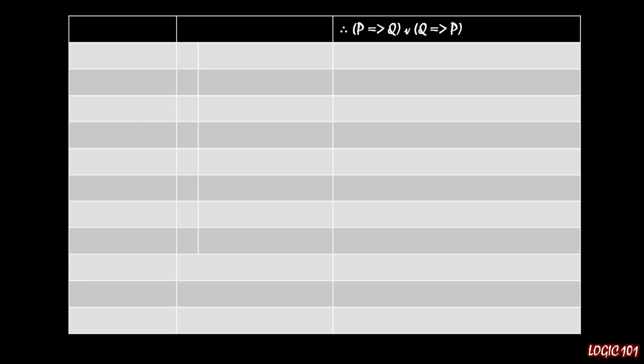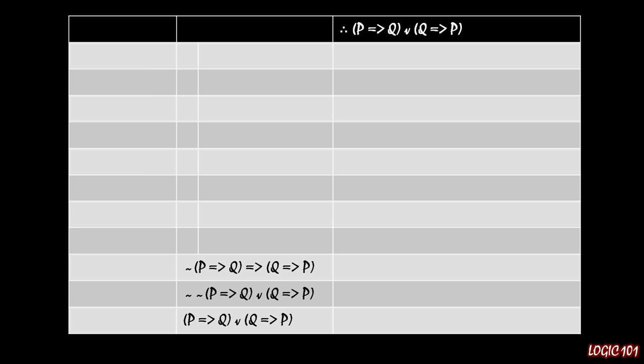If we start off a conditional proof and show that it holds, we can then use material implication to morph that back into a disjunction. Essentially I'm working backward: we know the last line of this proof is supposed to be the conclusion, and through a little logical magic, we can work that conclusion back into an implication. So if we had the statement 'not P implies Q implies Q implies P,' we could apply material implication — negating the antecedent and turning the main conditional into an 'or' — to get the middle line, and then through double negation finish off the proof.